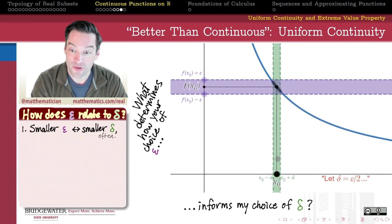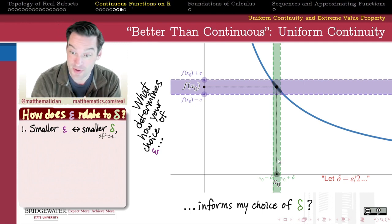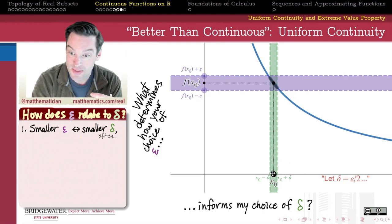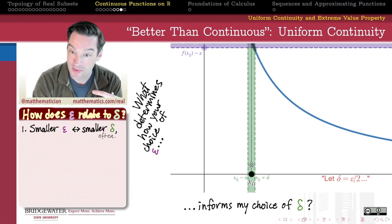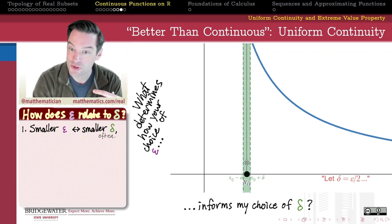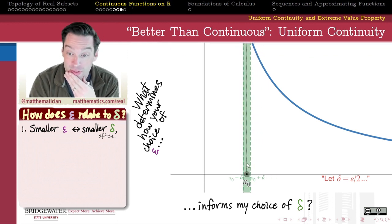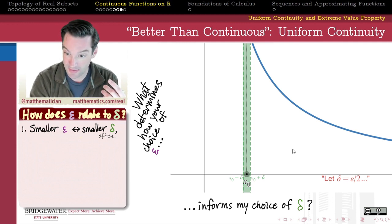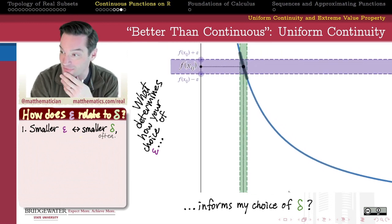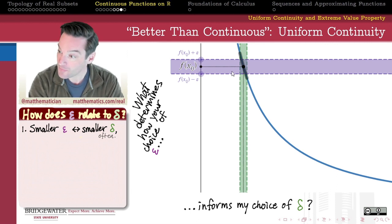On the other hand, the further toward the left that I go, the less good of a choice this appears to be because the graph seems to be getting very steep over here. And my choice of delta equals epsilon over 2 eventually stops working. If you look at this point, I'm going to pull it down just a little bit so we can see it.